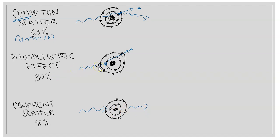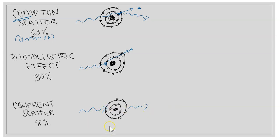Photoelectric effect happens 30% of the time. The photon goes to an inner shell electron, kicks it out — ionization occurs. The difference from Compton scatter is that there is no scattered photon going elsewhere. Summary: Compton = photon in, photon out, electron out. Photoelectric = photon in, electron out, no photon out. Coherent = photon in, photon out, no electron out — no ionization.